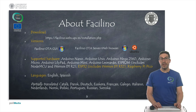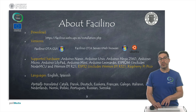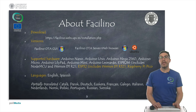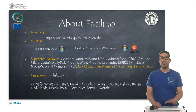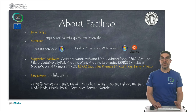As you already know, Facilino is a software for programming electronics — low-cost electronics, such as Arduino electronics, also ESP electronics and also Raspberry Pi Pico electronics. So all these electronics are supported by Facilino. And it has been translated into two languages, but also has been partially translated into many other languages as you can see there.